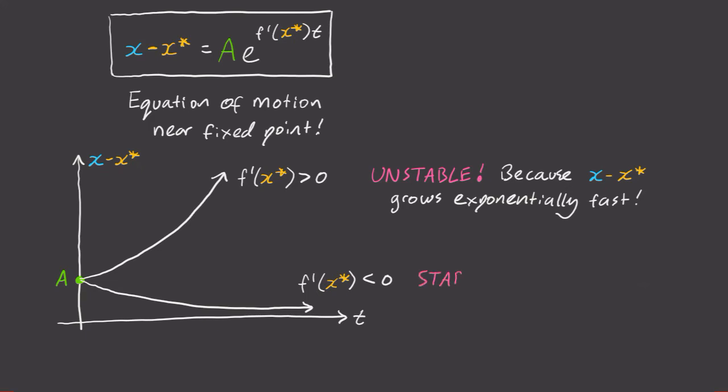Likewise, if f dash of x star is less than zero, then we can call this fixed point stable. It's stable because the distance from your fixed point decays to zero, implying that if you start near your fixed point, you'll get sucked towards that fixed point.